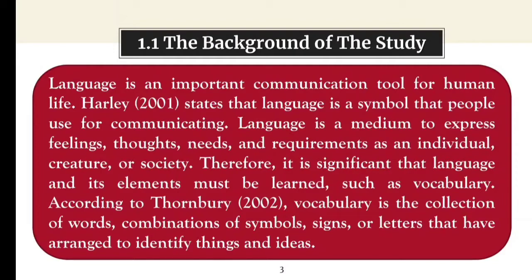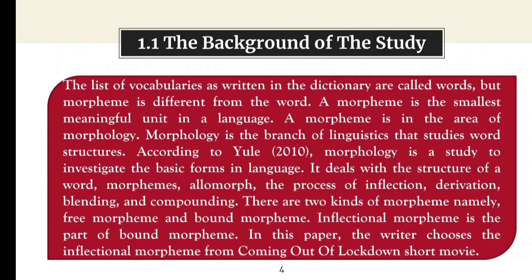According to Tanburi, vocabulary is the collection of words, combination of symbols, signs, or letters that have been arranged to identify things and ideas. The list of vocabularies as written in a dictionary are called words, but morpheme is different from the word. A morpheme is the smallest meaningful unit in a language.